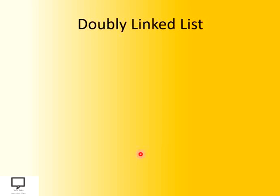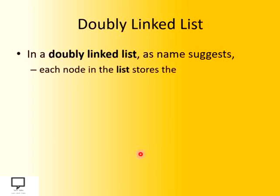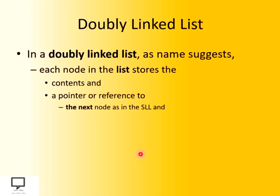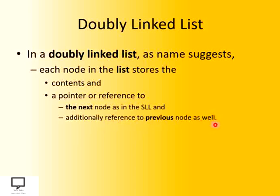So let's see what is a doubly linked list. As the name suggests, each node in the list stores three fields. The first one is content, the second one is a pointer or reference to the next node — same as SLL. But the main difference between SLL and DLL is that an additional reference to the previous node is also available. So two pointers are available: one to the next node and another to the previous node — that's why the name is doubly linked list.